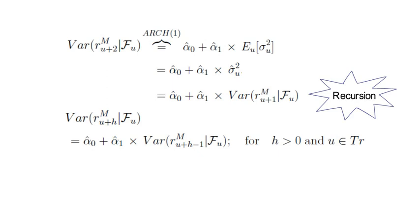Now, that recursion starts with the condition that the variance of R^M_(U+1) conditional on F_U equals σ²_U, which is nothing else than α̂₀ + α̂₁ times (R^M_U - μ̂)².